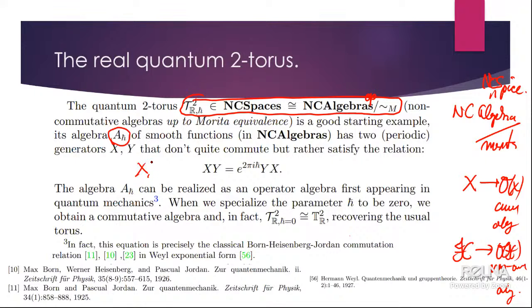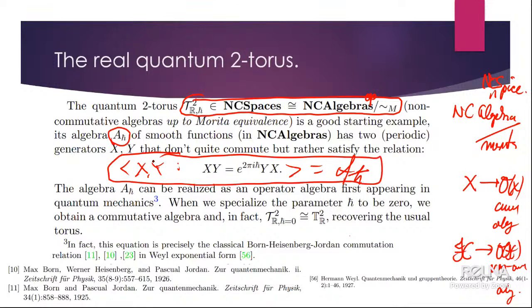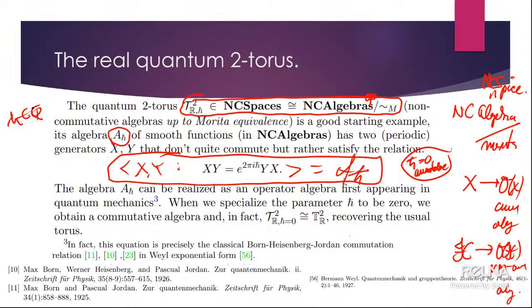The algebra is generated by two letters with a relation — many mathematicians call this the non-commutative torus. Notice that if H-bar is zero, this becomes commutative. Something less obvious but true: if H-bar is rational, the algebra — while not commutative — is secretly commutative, namely it is Morita equivalent to a commutative algebra. There is this equivalence relation called Morita equivalence that sends it to a commutative algebra.